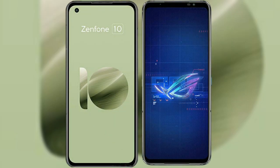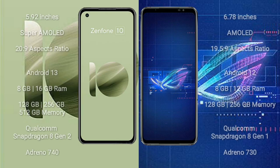I will compare the new Asus Zenfone 10 with the Asus ROG Phone 6. The Zenfone 10 comes with a 5.92-inch Super AMOLED display and Snapdragon 8 Gen 2. The ROG Phone 6 comes with a 6.78-inch AMOLED display and Snapdragon 8 Gen 1.